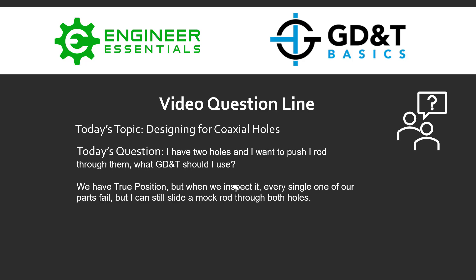Today's question is: I have two holes and I want to push a rod through them. What GD&T should I use? We have true position, but when we inspect it every single one of our parts fail, but we can still slide a mock rod through both of the holes.